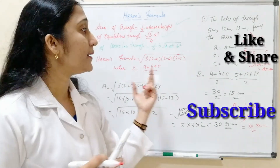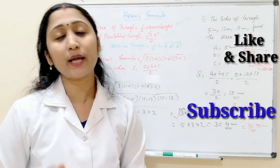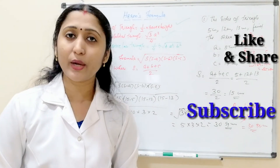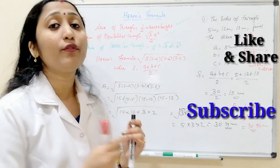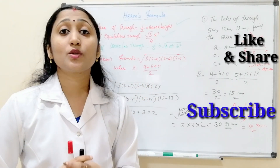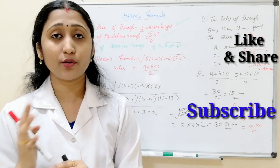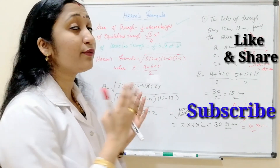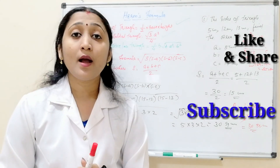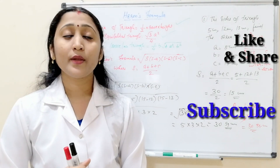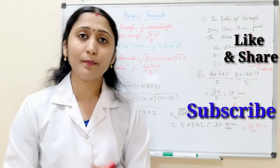The area of this triangle is 30 square centimeters using Heron's formula. I hope you all understood. If you have any doubts or suggestions, please comment in the comment box and I will clarify. The next video will be based on the derivation of Heron's formula. If you like this video, like and share with your friends. If it is useful, please subscribe to my channel. Thank you so much for watching. See you in my next video. Bye.